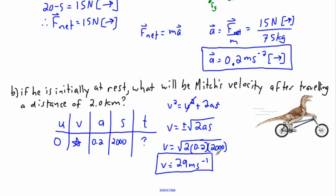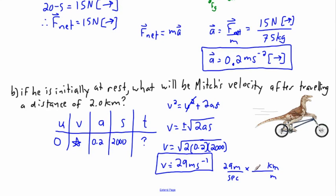If you're not sure how fast that really is, you could always convert it to kilometers per hour. So let's say I have 29 meters per second and I want to cancel out the units I don't want. I don't want meters, I want kilometers; I don't want seconds, I want hours. So I'll put something with meters on the bottom and kilometers on the top. I know that one kilometer is 1,000 meters.